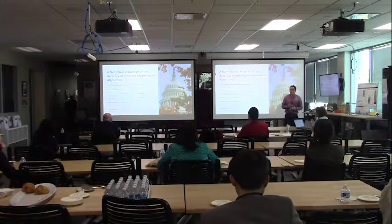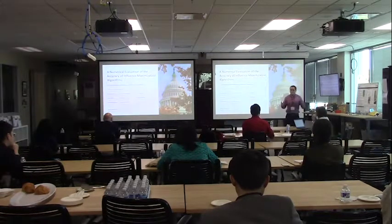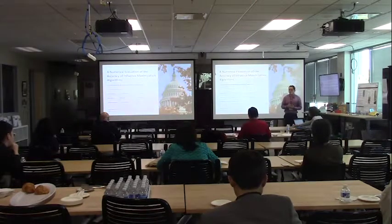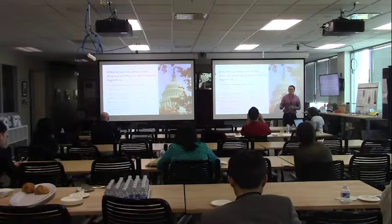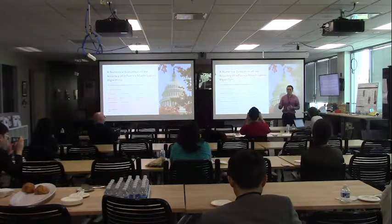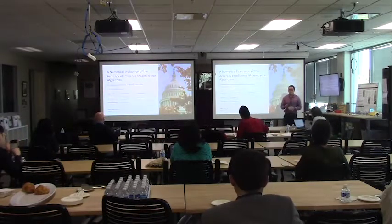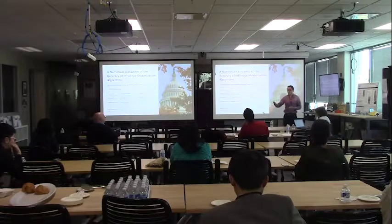Influence maximization is the problem of finding influential nodes within the network, and it's generally an intractable problem because the solution space grows in a combinatorial fashion with respect to the size of the network. Also, evaluating the influence of a set of nodes is expensive. Therefore, the literature, which started in 2003, has largely been dedicated to the development of approximation algorithms, the best of which had a theoretical guarantee of achieving 63% — that is, 1 minus 1 over e — of the optimum solution. Where these approximations fall in the 63% to 100% range is an empirical question that has been difficult to answer because it requires knowing the optimal solution.